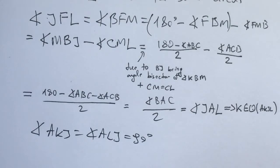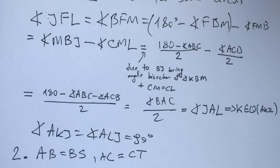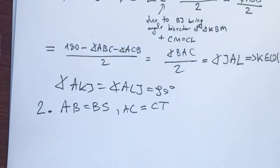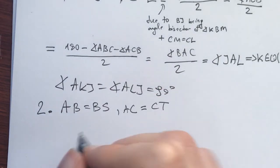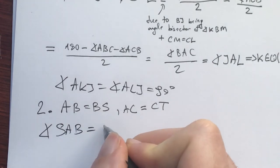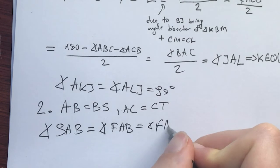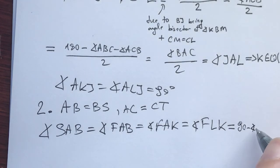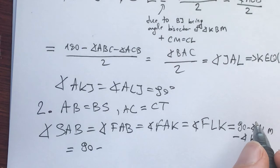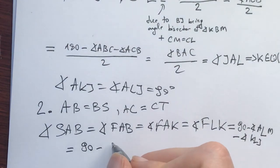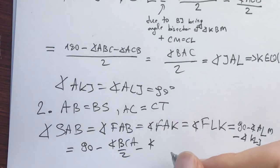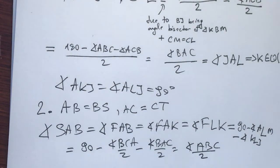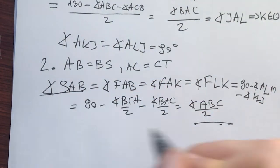And now after this, I will go on to the second point, which is that AB is equal to BS and AC is equal to CT. Now, how will we prove this? Well, we know that S is an intersection of AF and BC. So we would know that the angle SAB is equal to the angle FAB is equal to the angle FAK is equal to the angle FLK. And this is equal to 90 minus the angle ALM minus the angle KLJ, which is equal to 90 minus ALM is equal to how much? ALM is same as CLM, which is equal to the angle ABC over two.